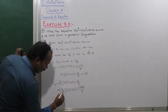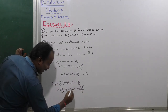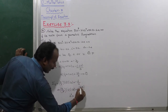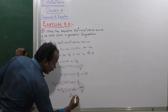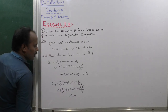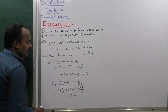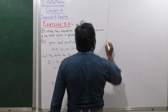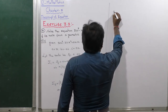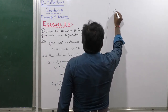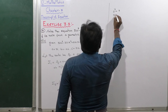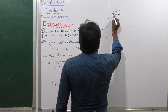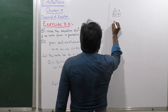The R cancels, leaving A cubed equals 8. Therefore A equals 2. So replace the value A equals 2 into equation number 1.